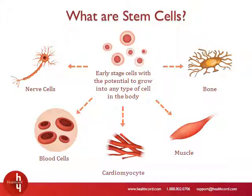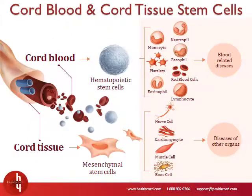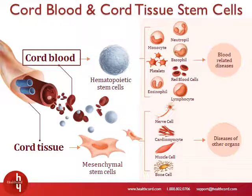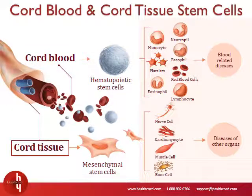What are stem cells? Stem cells are early stage cells that have the capacity to grow and give rise to other types of cells in the body. They are useful for repairing damaged cells, rebuilding tissue, and helping our bodies heal. Cord blood and cord tissue are both sources of newborn stem cells. Cord blood contains hematopoietic stem cells, which give rise to other types of blood cells and immune cells.